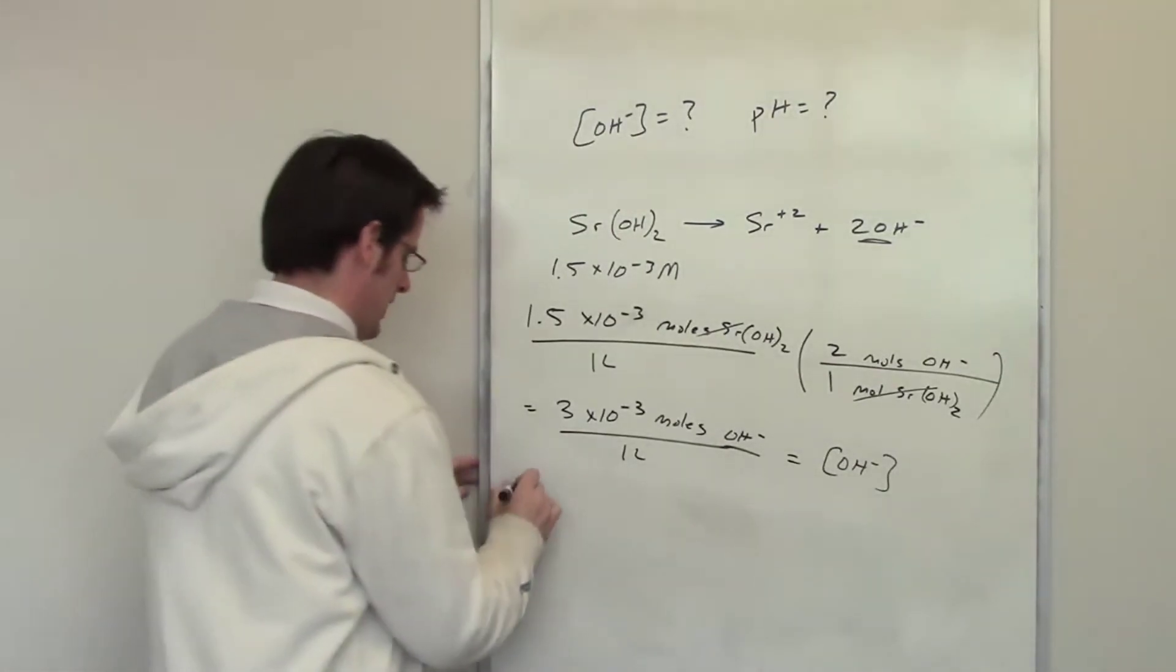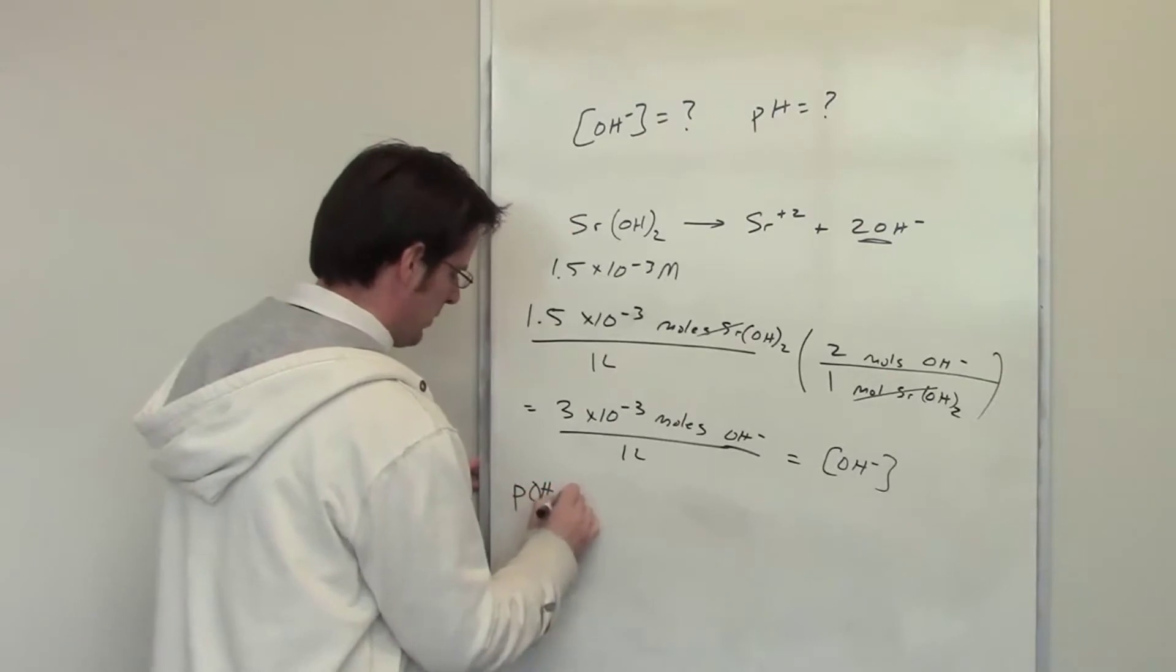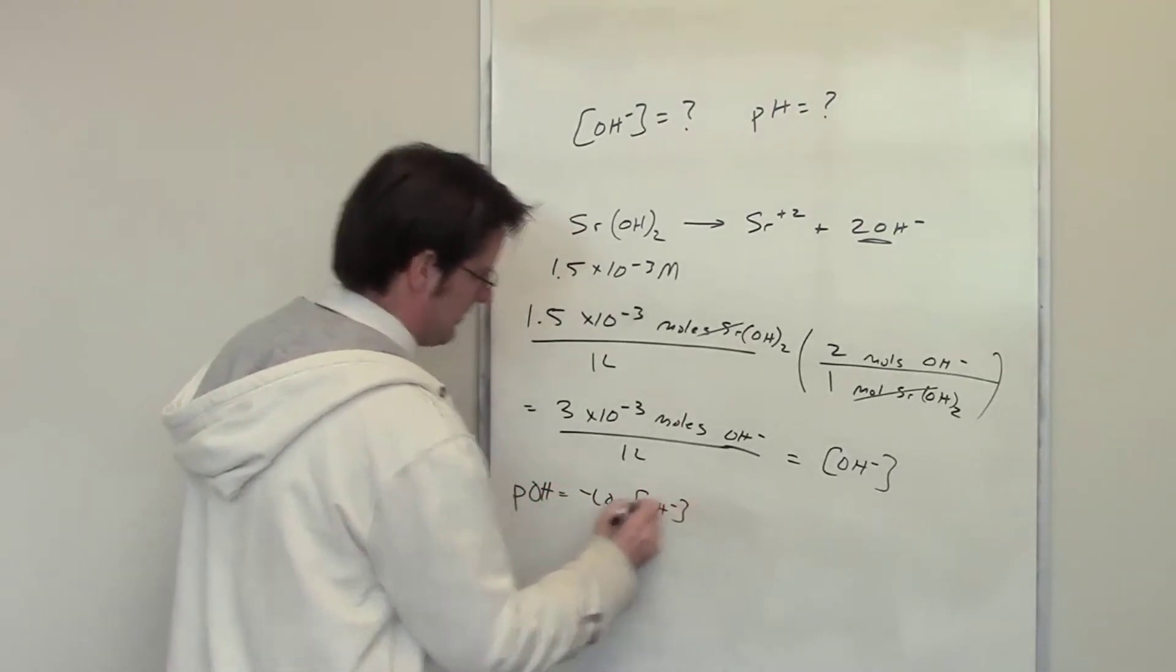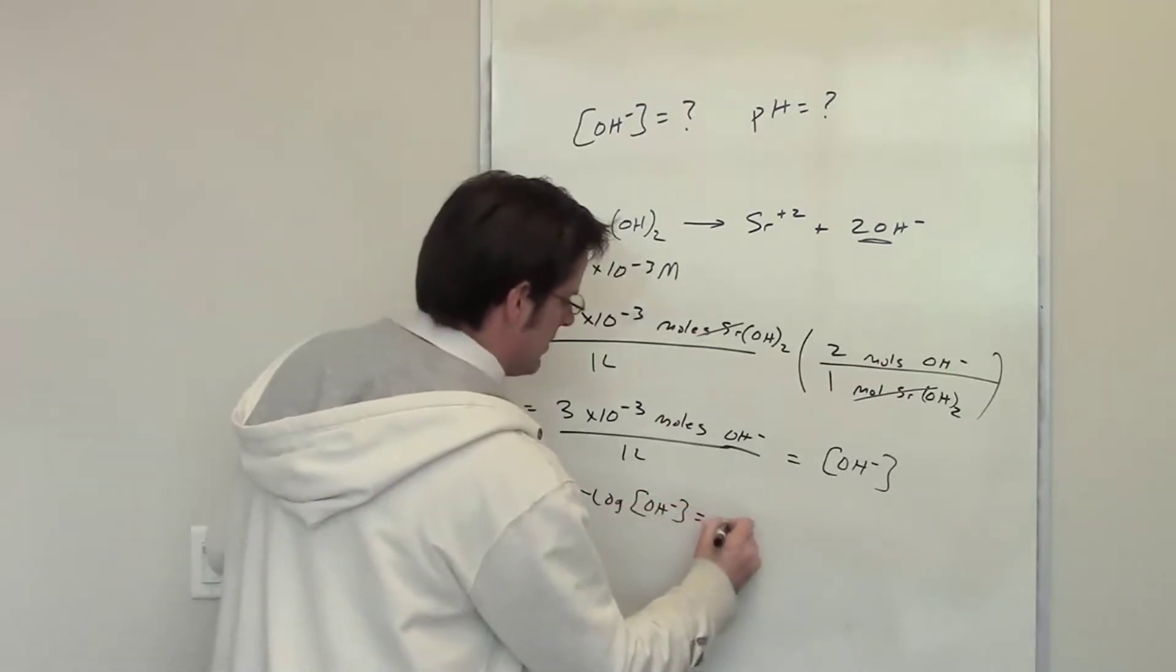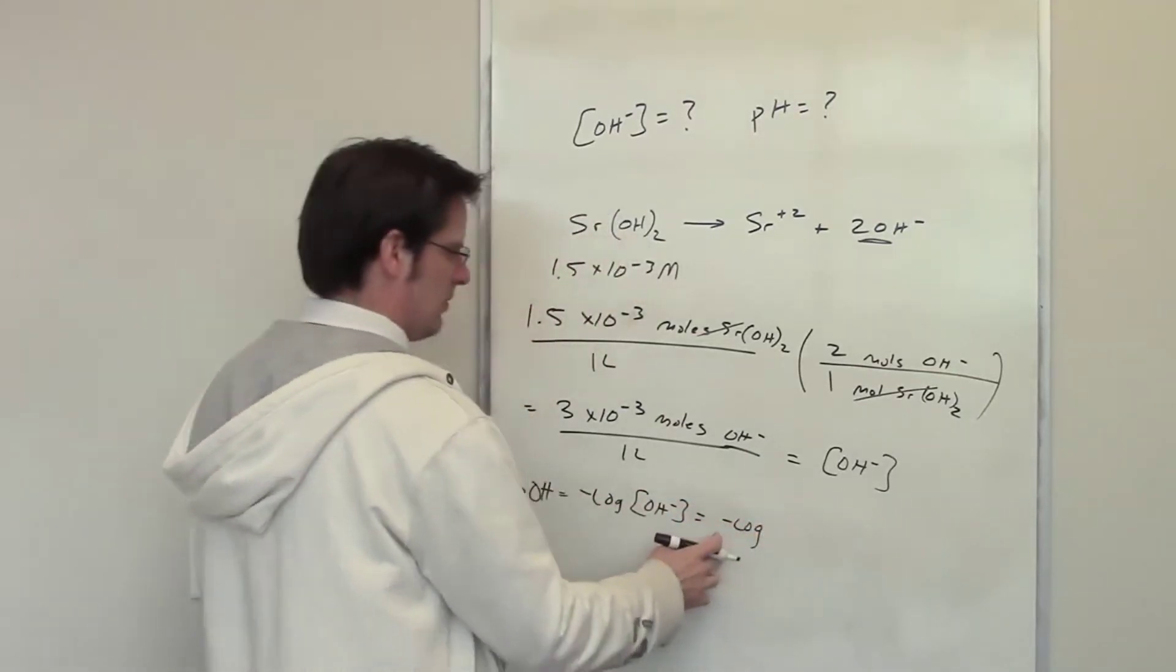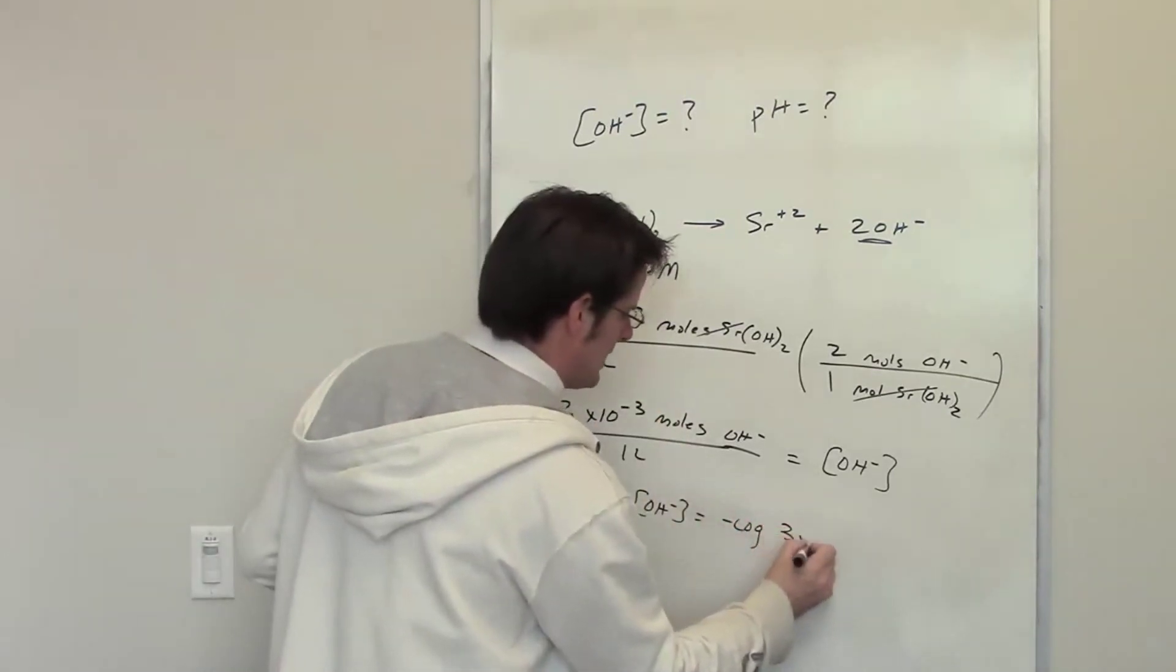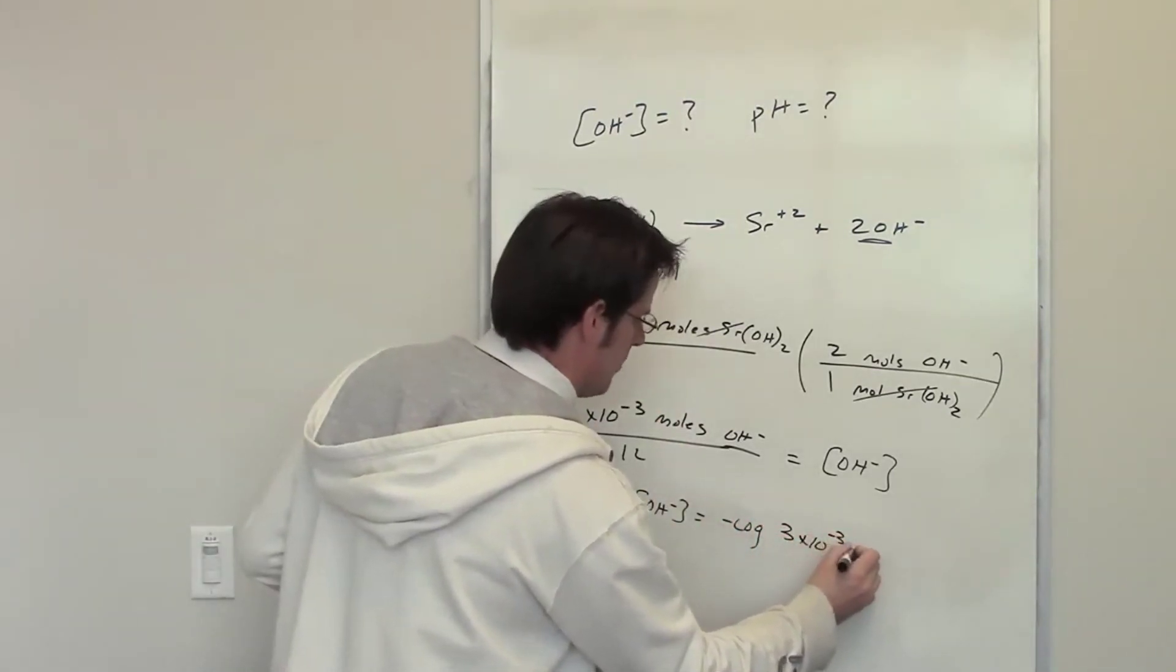Well, I told you in an earlier video that pOH is equal to the negative log of the concentration of hydroxide. That means that pOH is equal to the negative log of 3 times 10 to the negative third molar.